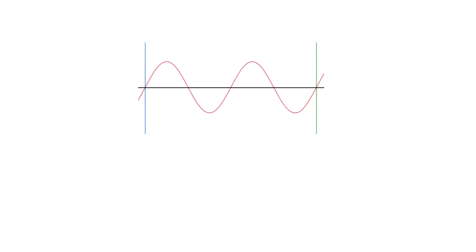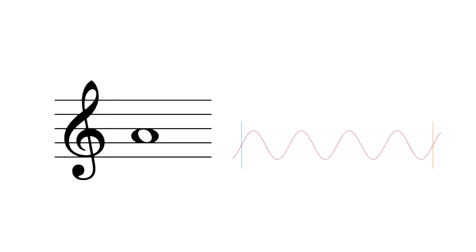A note is a wave with a specific frequency, and two notes sound consonant together if those waves line up nicely. This happens when the note's frequencies have a simple ratio. For example, 440 Hz and 660 Hz make a perfect fifth, A and E, with a 3 to 2 ratio.